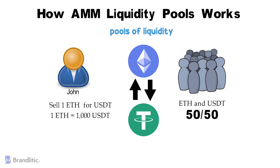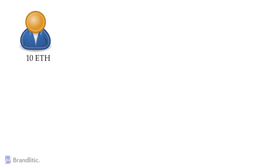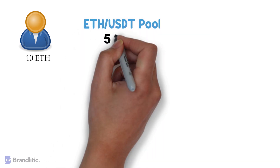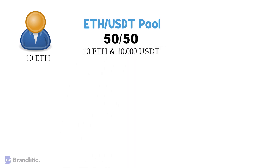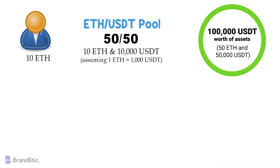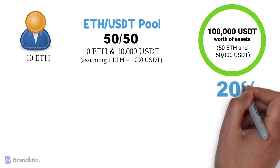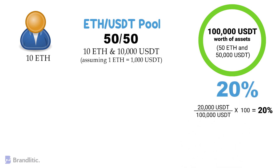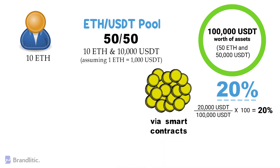To understand things better, let's take another example. If a liquidity provider with 10 Ethereum wishes to add liquidity to an ETH pool with a 50-50 ratio, they will need to deposit 10 Ethereum and 10,000 USDT, assuming 1 Ethereum equals 1000 USDT. If the pool they commit to has a total of 100,000 USDT worth of assets — say 50 Ethereum and 50,000 USDT — their share will be equal to 20%. When the liquidity provider deposits their assets through the smart contract, they are automatically issued liquidity pool tokens, which entitle them to withdraw their 20% share of the pool at any time.